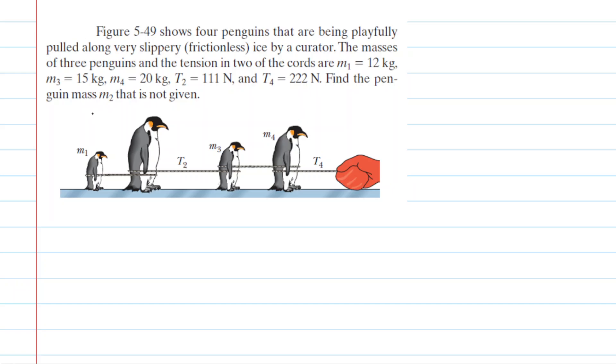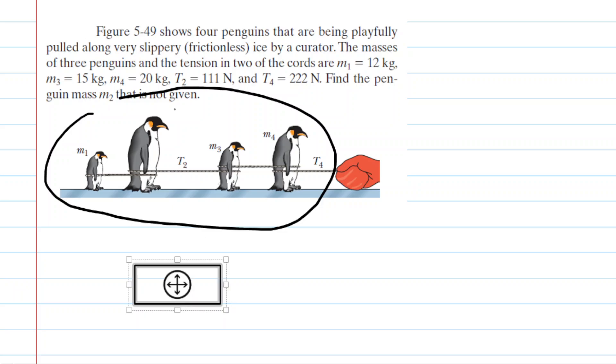And because we're including all four penguins, we would maybe want to make a redraw here. We're going to draw just a box to represent all four penguins. And if you look at the picture carefully, if all four penguins are our system, then the only tension being applied to that system is tension four, T4. So we will label that as the sole force acting horizontally on our system.